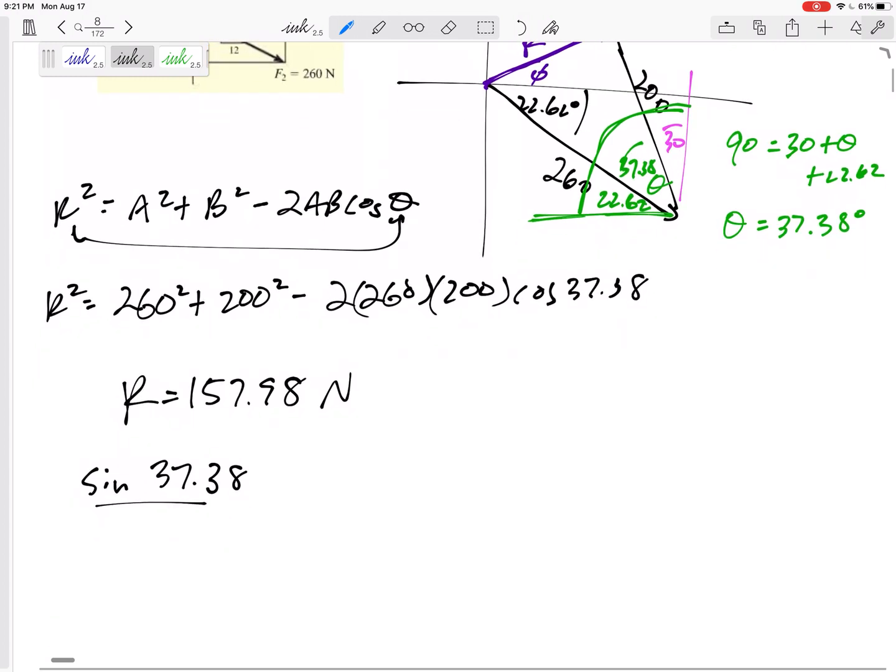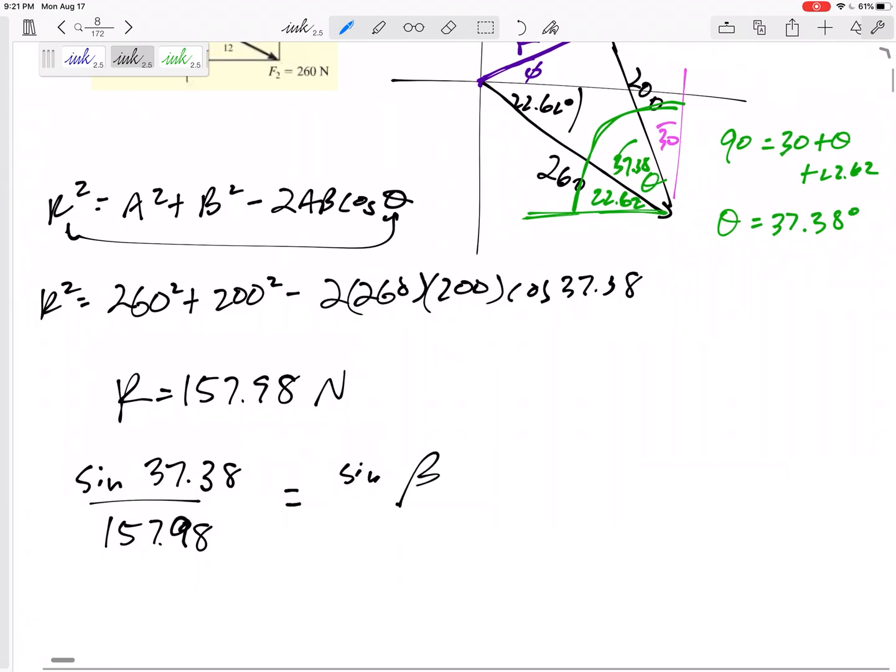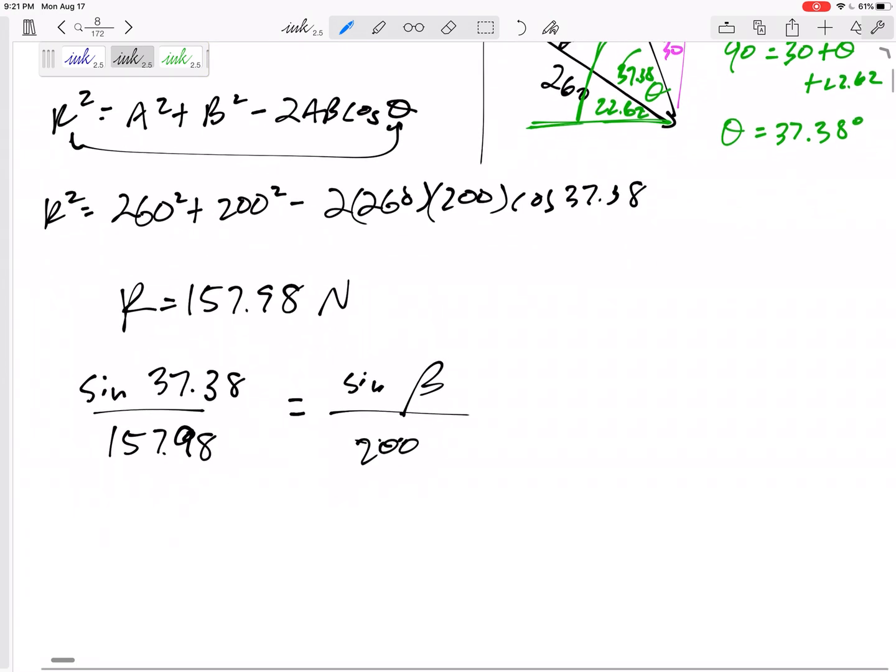Sine of 37.38 over the side opposite, which is r. Oh, which I do know now. Sorry, I said yes. I know 157.98 now equals sine of, let me just call this right now beta. That's this whole angle. You could say phi plus 22.62. I'm just going to call this whole angle beta over 200. All right, so now that would tell me that my calculator spits out 50.23 degrees as beta.